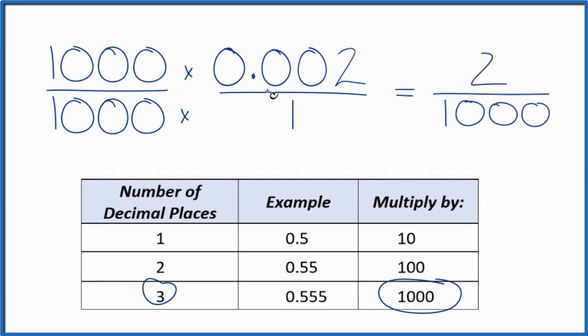So the decimal 0.002 equals the fraction 2 over 1,000. And we can reduce this further. Let's do that.